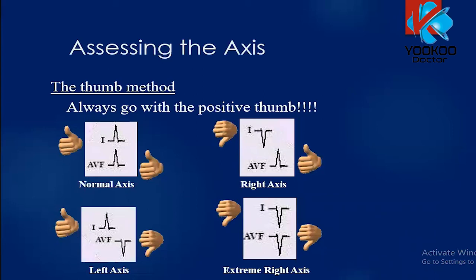For assessing the axis, we use the thumb method, with our reference being lead 1 and AVF. If both lead 1 and AVF have positive QRS complexes, that is normal axis. If it is downward in lead 1 and upward in AVF, that is right axis deviation. If positive in lead 1 but negative in AVF, that is left axis deviation. If both are negative, that is extreme right axis deviation.